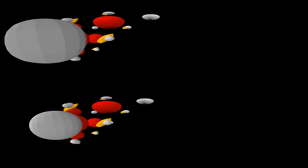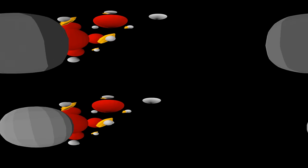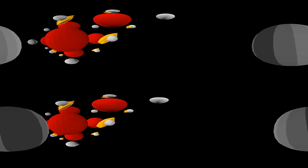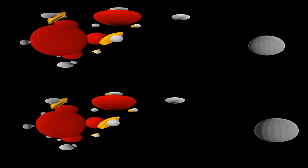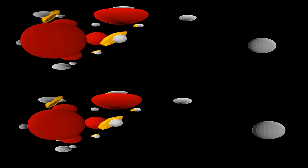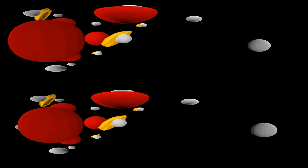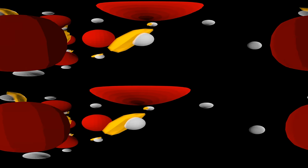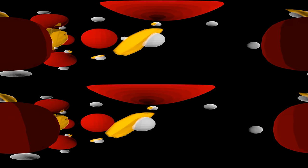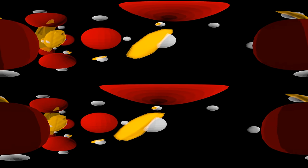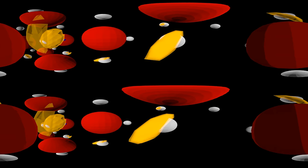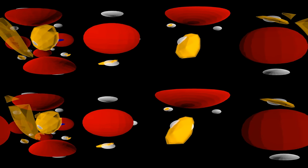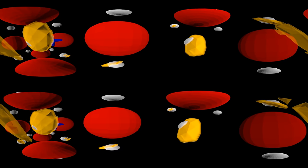Look up and down and around you. What you can see for this simple crystal happens in any solar cell material or light emitting device. Whether a material can be used for one or the other application strongly depends on this interplay of electron and hole.